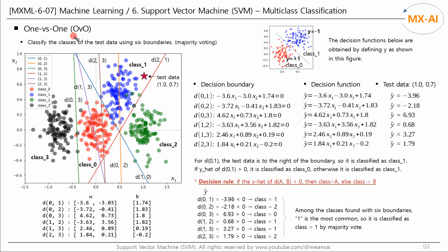Let's take a closer look at the OVO method. In the figure below, six boundaries separate the four classes. This line is the decision boundary between class 0 and class 3. We can find W and B for these six decision boundaries using binary classification of linear SVM. The results of this example are as follows, and the six equations of the decision boundary are as follows. The equation for the boundary separating class 1 and class 0 has W1 as negative 3.6, W2 as negative 3.03, and intercept B as 1.74.